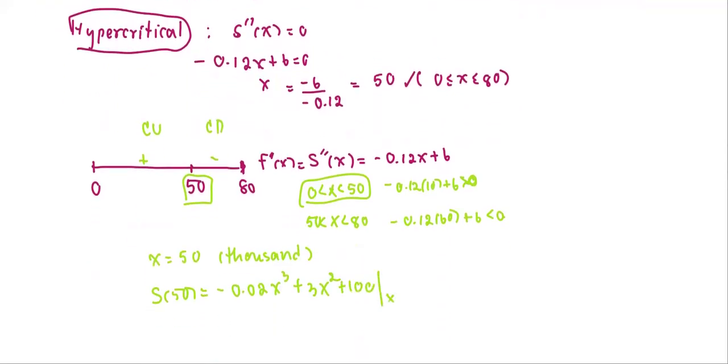So replace x with the value of 50 to get -0.02(50)³ + 3(50)² + 100. We get the result 5,100, but the unit is in thousands.